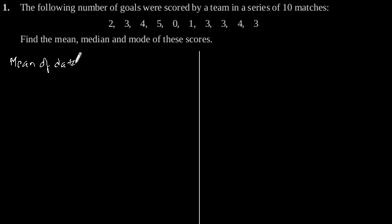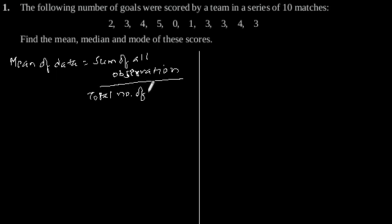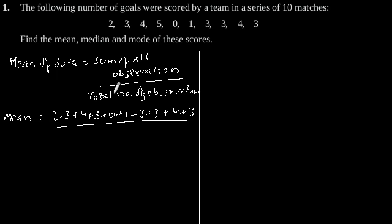Mean of data is equal to sum of all observations divided by total number of observations. So, mean is equal to 2 plus 3 plus 4 plus 5 plus 0 plus 1 plus 3 plus 3 plus 4 plus 3, and the total number of observations is 10.